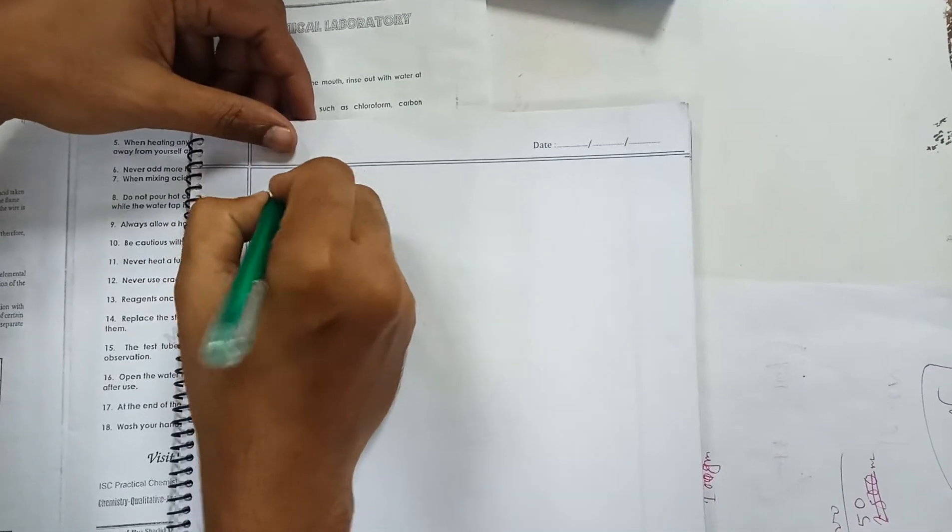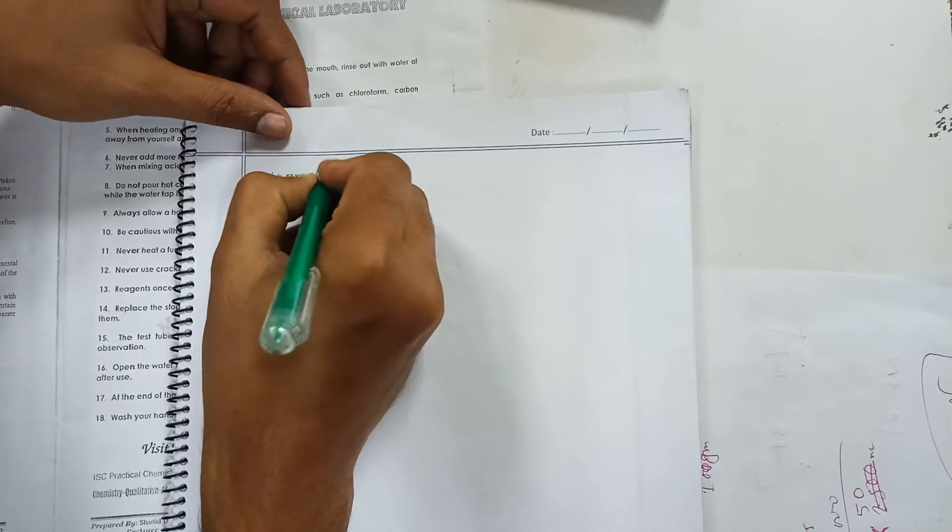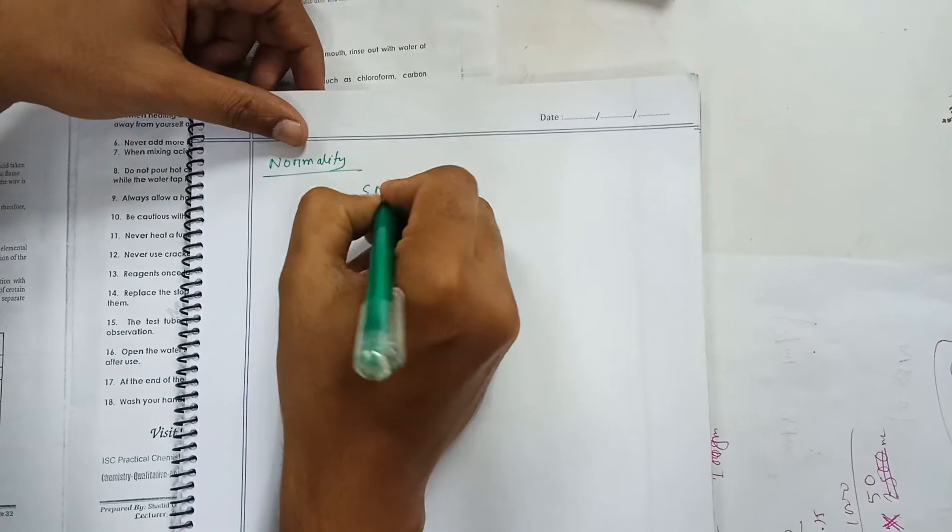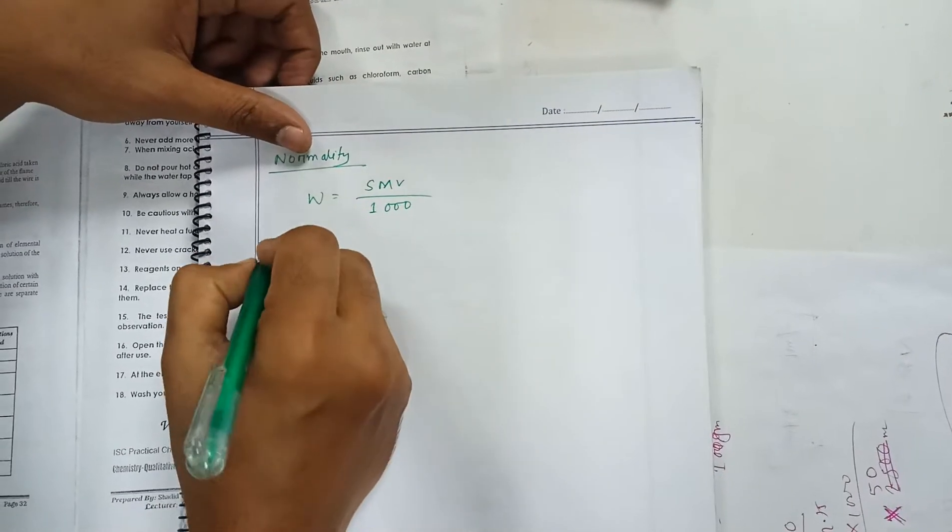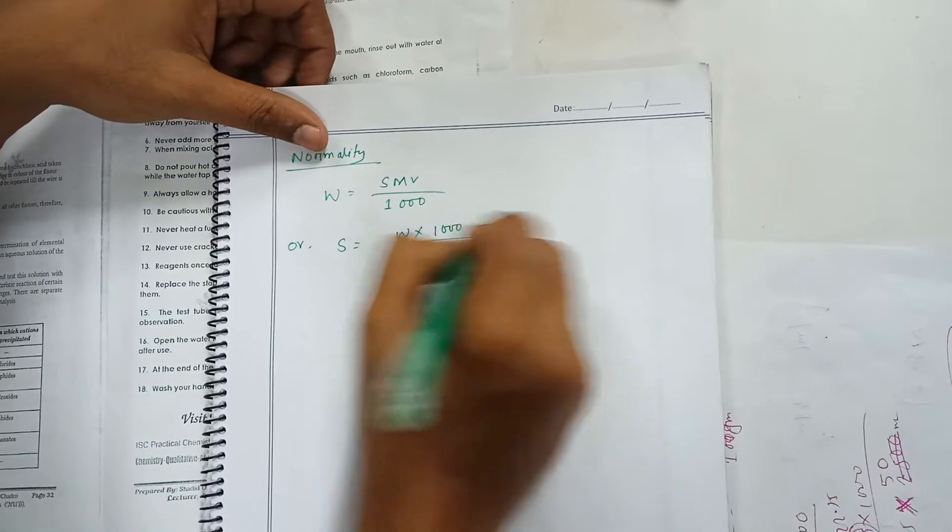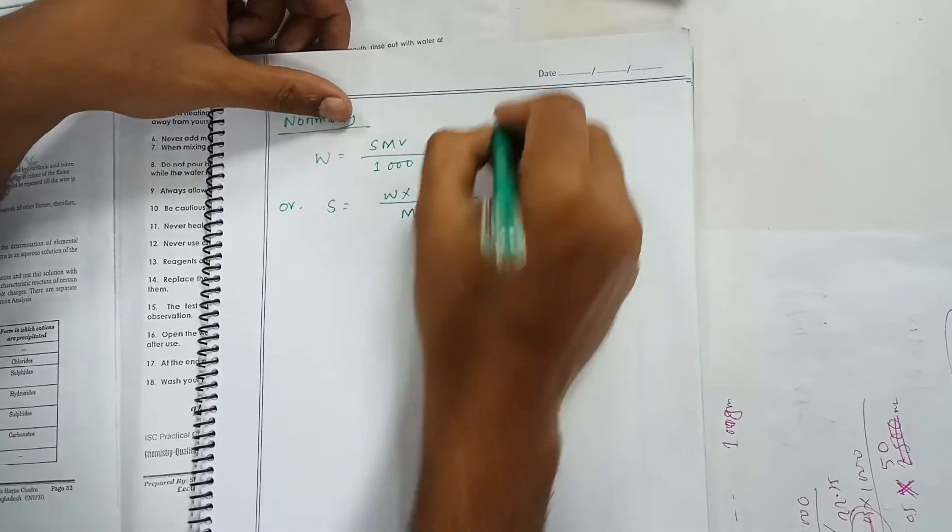For the calculation of normality, we are going to solve the problem by using the equation W equals S M V divided by 1000, or S equals W times 1000 divided by M V.